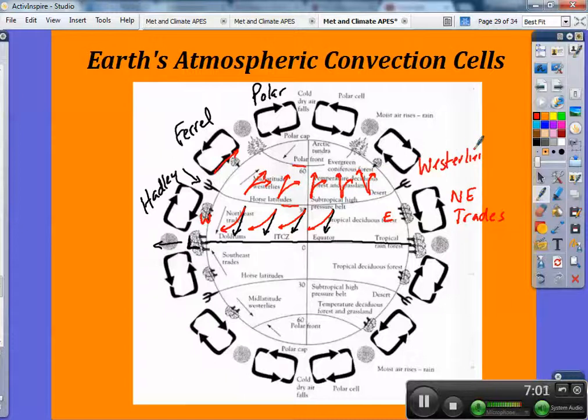As they are deflected to the right, what you're creating now is these prevailing westerly winds. These westerlies and northeast trade winds, we describe winds by the direction from which they are traveling. So from west to east, they're called westerlies. From east to west, they're called easterlies.